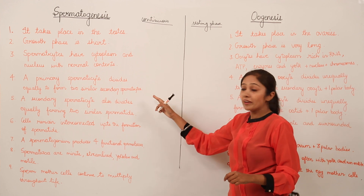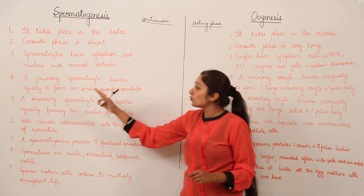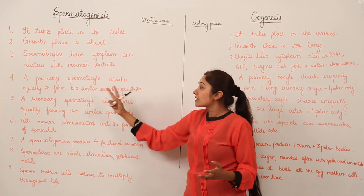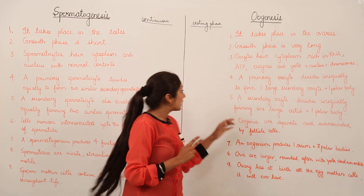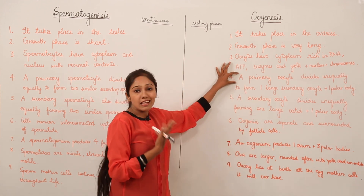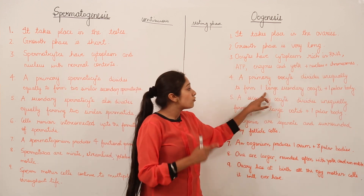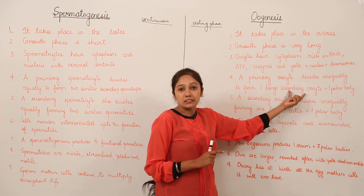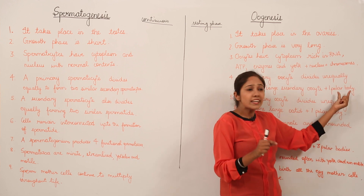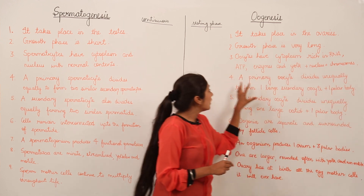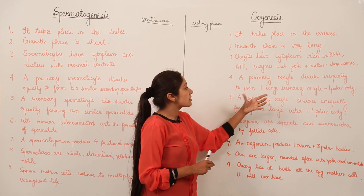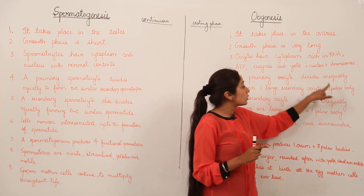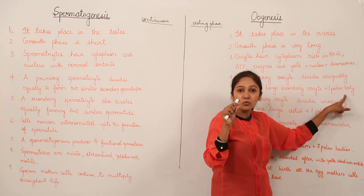Fourth point: a primary spermatocyte divides equally to form two similar secondary spermatocytes. But in the case of a primary oocyte, it divides unequally to form one large secondary oocyte plus one polar body. This polar body is very small and non-functional, while the secondary oocyte is the single functional cell produced.